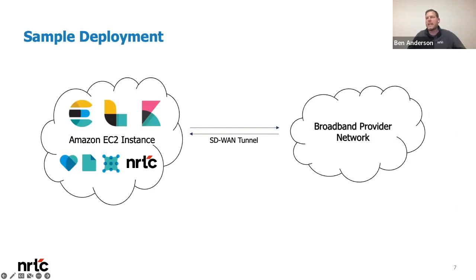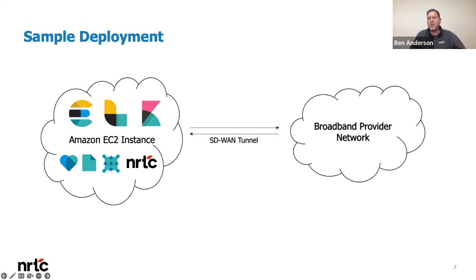At a high level, the solution we deploy for each of our members looks something like this. Within each broadband provider network, there's a variety of different infrastructure components, all of which generate data. We ship the data using Logstash and Elastic over an SD-WAN tunnel into an environment hosted exclusively for each member in Amazon. From there, we provide members with rich visuals using Kibana and the ability to interpret and manipulate the data. Other ways we grab data include using tools like HeartBeat, FileBeat, machine learning, and a variety of special sauce we incorporate at NRTC — things like automation, proprietary systems, and workflows — producing an incredibly powerful environment. We replicate this deployment across each member environment to keep data separate and secure.